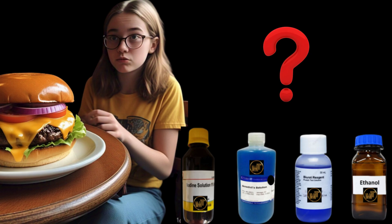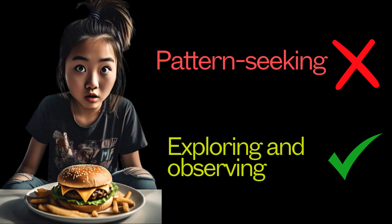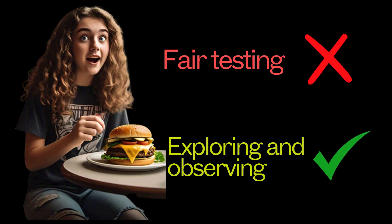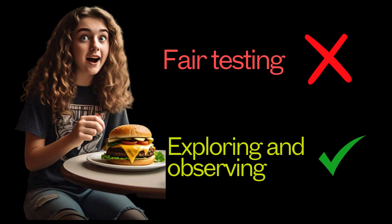The chemical tests we use — iodine, Benedict's, Biuret, and ethanol — are qualitative; they reveal the presence or absence of nutrients, not how they change under different conditions. So we can conclude: pattern-seeking is not the right choice because we are not looking for trends or relationships across multiple samples; fair testing is not suitable because we are not testing the effect of a variable on nutrient content; and exploring and observing is the right choice because we are using a systematic approach to explore what is in the food by observing the outcomes of four different qualitative tests using appropriate reagents.